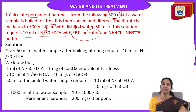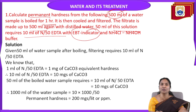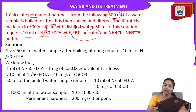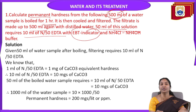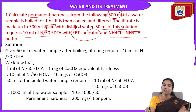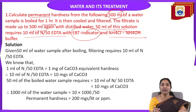When we add the EBT indicator, the color of the solution is wine red. When titrated against EDTA from the burette, the color changes from wine red to blue — that is the end point. In this EDTA method we use Eriochrome Black T indicator to determine the end point. We are also using a buffer solution, which is ammonium chloride and ammonium hydroxide buffer.